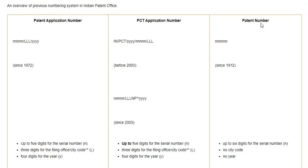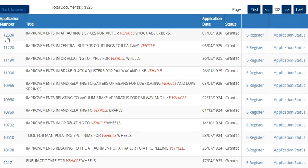For the patent number format, there are six digits (6N) — just a serial number with no office code and no year. For example: 12330. Before 1970, the application number and the patent number issued after grant were the same — for instance, 12330 served as both the application number and the granted patent number.